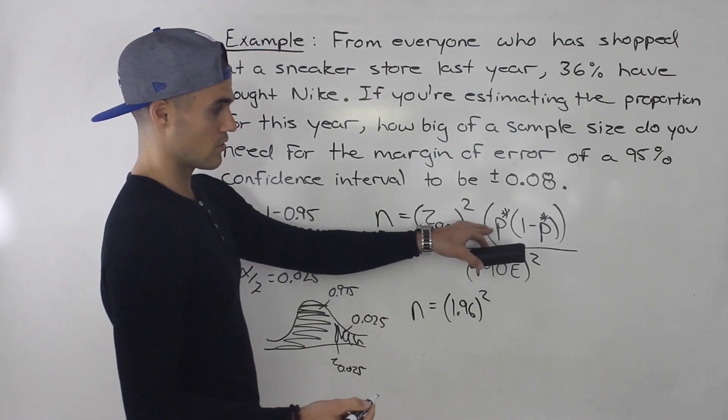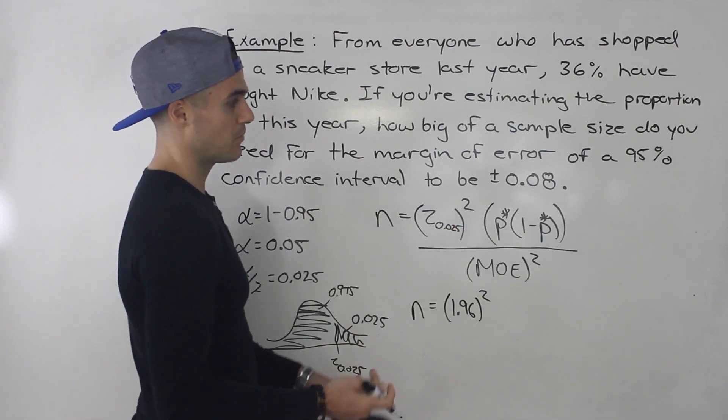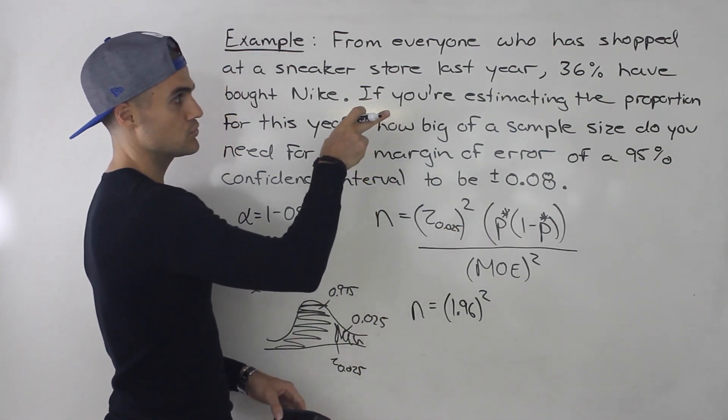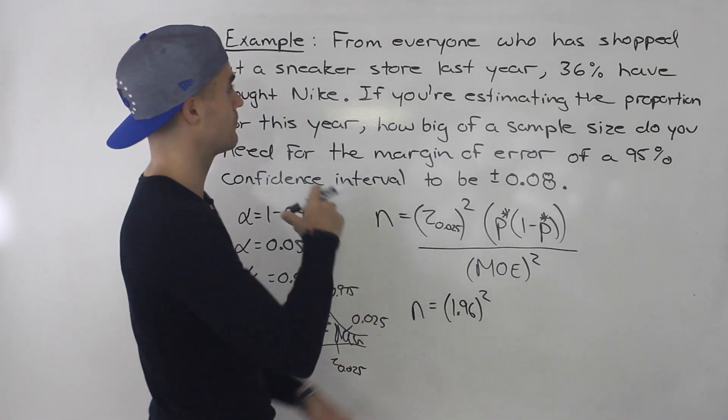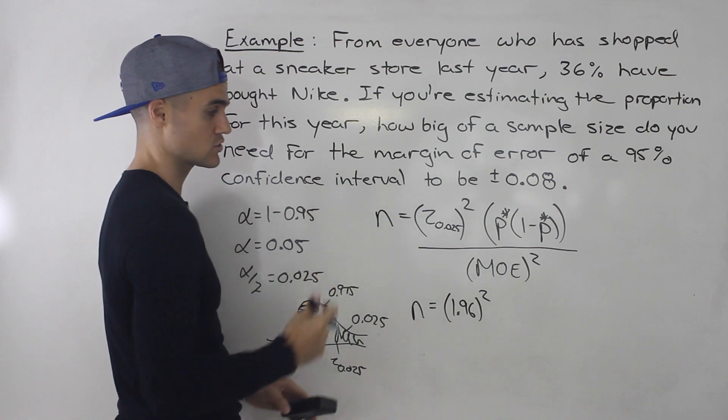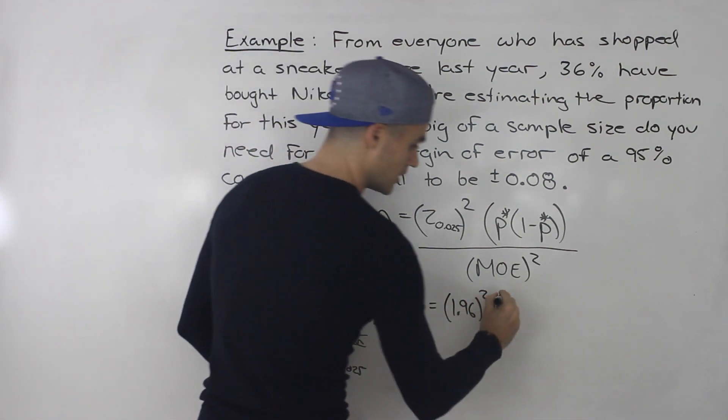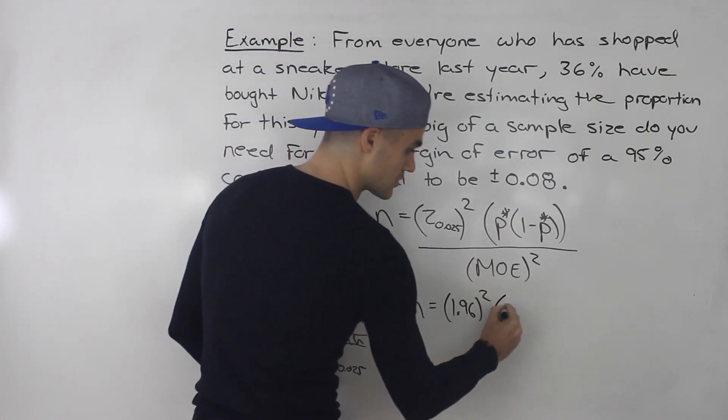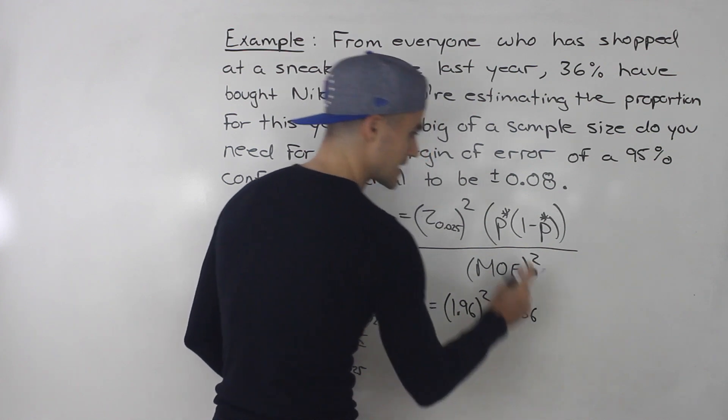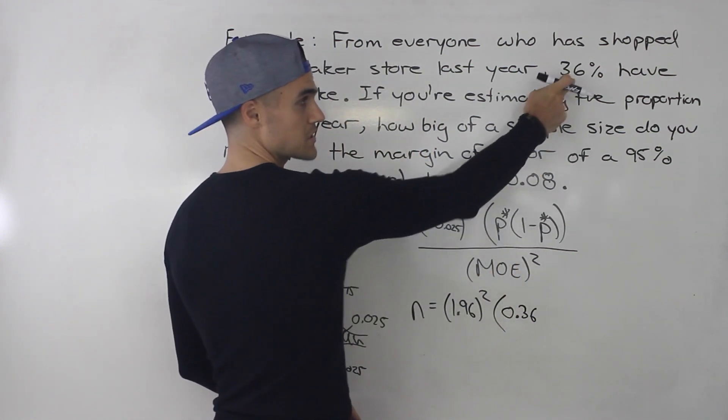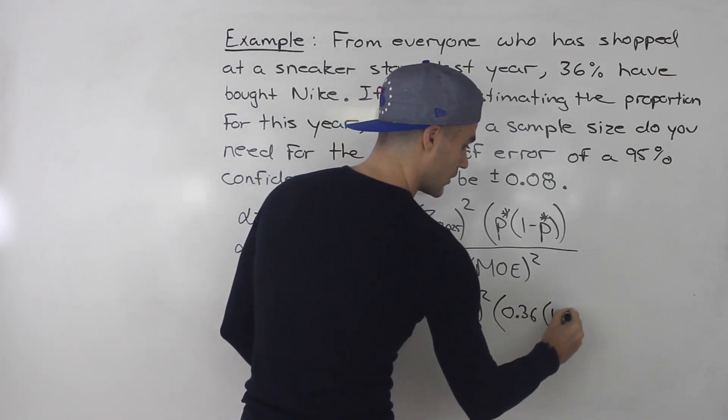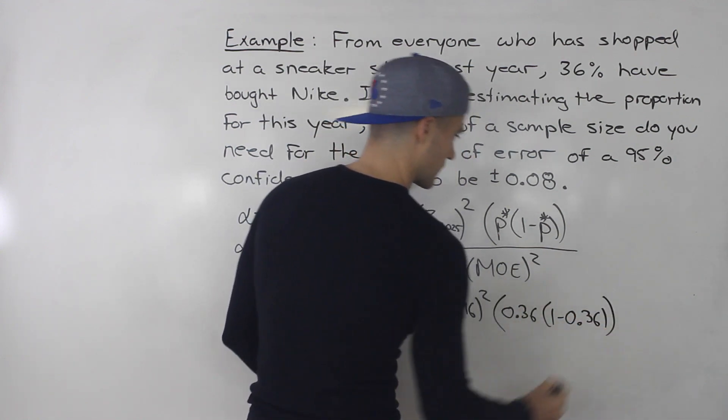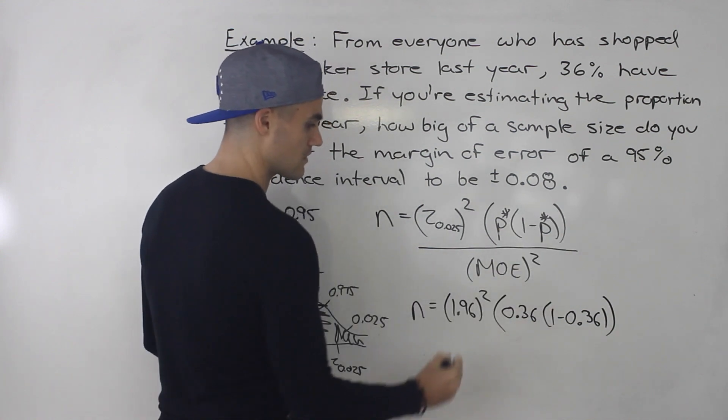So n is going to be 1.96 squared. Now, the estimate for the population proportion, we can use last year's proportion. So notice that 36% bought Nike last year in the store out of everyone that shopped. So we would input 0.36. Remember, this always has to be decimals. So if they give you a percentage, change it to decimal. So this would be 0.36, 1 minus 0.36. So that's that bracket right there.